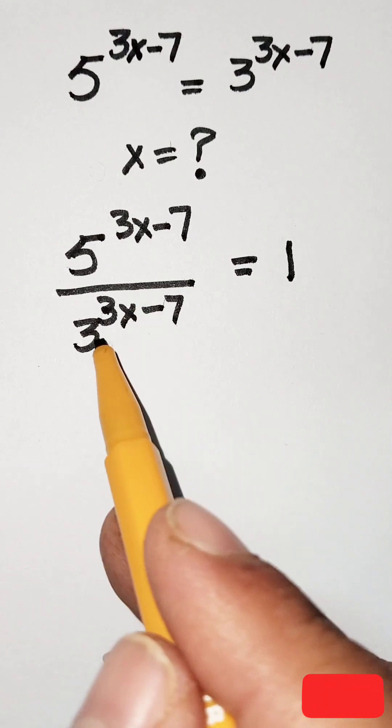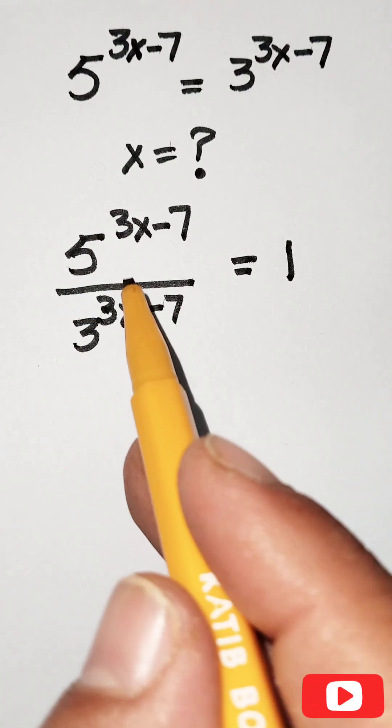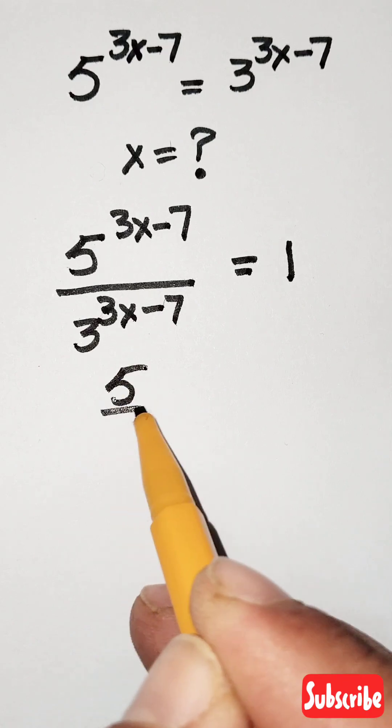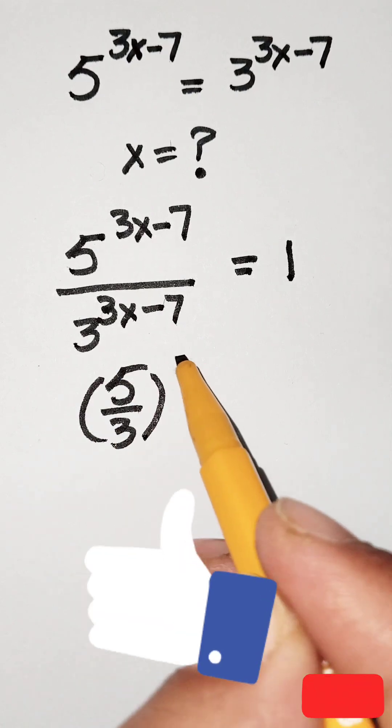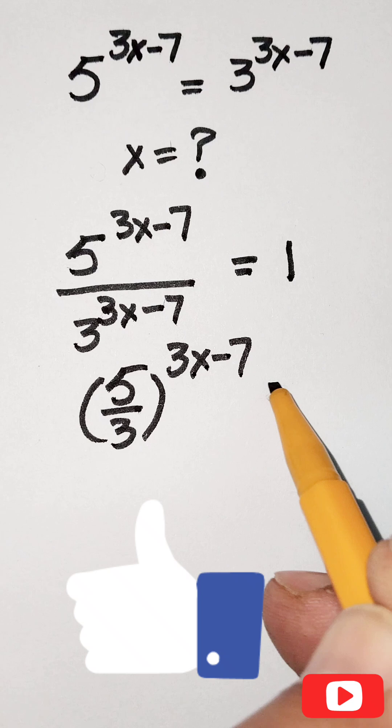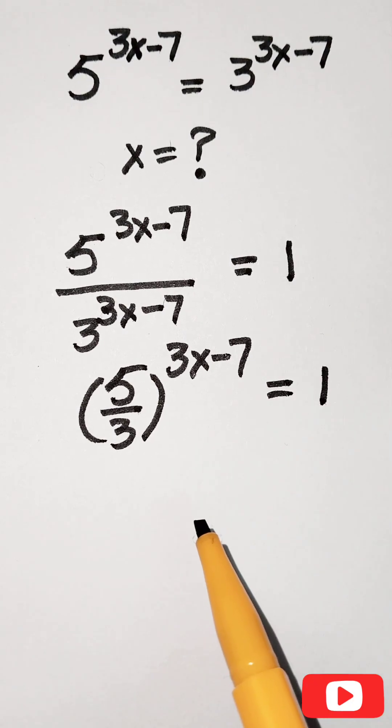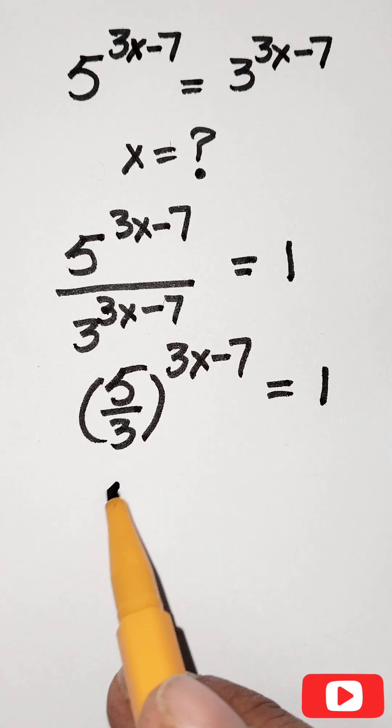Now we see that the bases are the same, so the exponents are the same. We can write 5 over 3 raised to the power 3x minus 7, which equals 1. Here we use the exponential law.